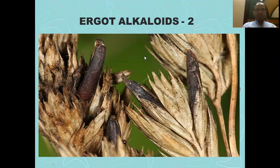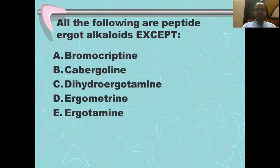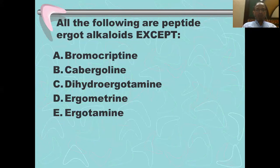So a brief recap of that lecture with some questions. The first question: all the following are peptide ergot alkaloids except. We classify the ergot alkaloids into two groups: the peptide ergot alkaloids and the amine ergot alkaloids. The answer is D. Ergometrine is an amine ergot alkaloid. All the others are peptide ergot alkaloids, including the dopamine agonists like bromocriptine, cabergoline, and pergolide, and the two ergots, dihydroergotamine and ergotamine.